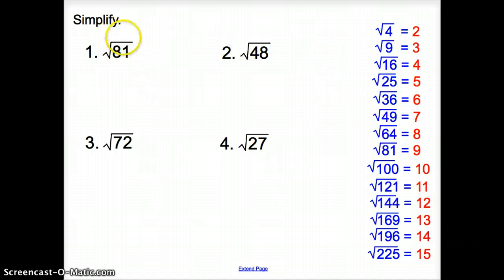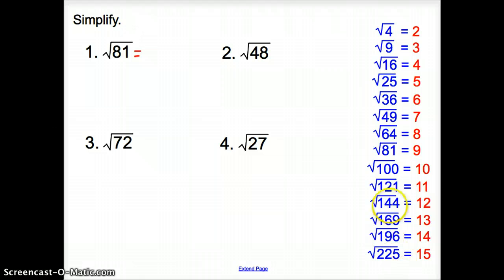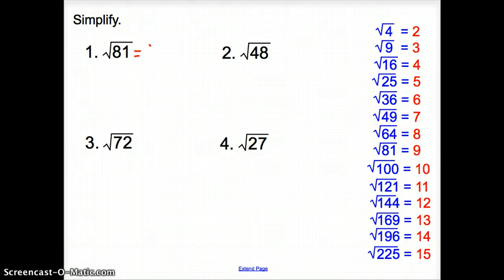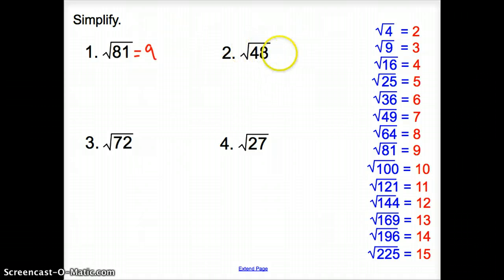So let's simplify some of these. The square root of 81 — do we see an 81 in the perfect squares list? Yes, we do. The square root of 81 is 9. Easy enough. How about number 2, the square root of 48? Do we see 48 in the blue numbers? Do we see the square root of 48? No, we do not.